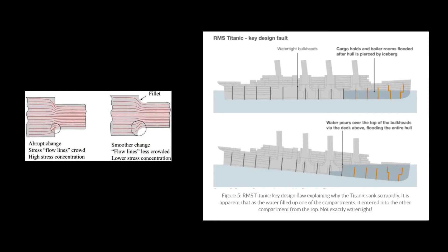Additionally, several other flaws likely contributed to the sinkage of the Titanic. During this time period, many ship architects lacked understanding of stress concentrators, so many ships were built with sharp corners that promoted brittle fracture. Also, the Titanic's lower compartments were not vertically waterproof. Although this was not a factor of sinkage, this flaw most likely sped up the Titanic's ocean descent.